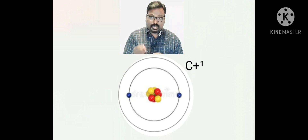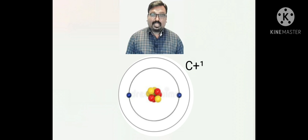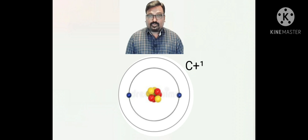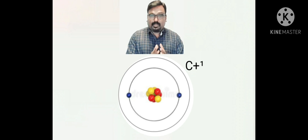Is it possible for carbon to become a cation? It is highly impossible, because to remove four electrons from a carbon atom we require a very large amount of energy. So becoming a cation is also highly impossible for carbon. Then how will carbon overcome this particular problem?